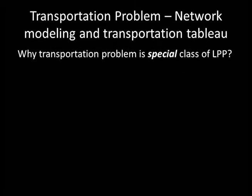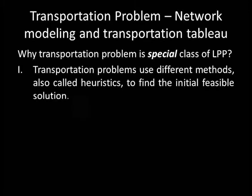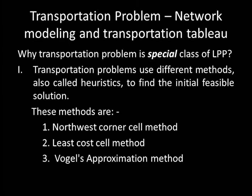For the second question — why is a transportation problem a special class of linear programming problem — the first reason is that transportation problems use different methods, also called heuristics, to find the initial feasible solution. These methods are the North-West Corner Cell Method, the Least-Cost Cell Method, and Vogel's Approximation Method. We will illustrate each of these methods when we solve problems.